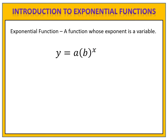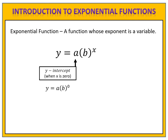In an exponential function, the a and b numbers represent certain things. The a value represents the y-intercept, which is the value of y when x is zero. This actually makes perfect sense, because if we substitute zero in place of x, we have a times b to the zero, and anything to the zero power is 1, which means y equals a. So the y-intercept is the point (0, a). To make life simple, when I want to know the y-intercept, I simply need to look at the a value.